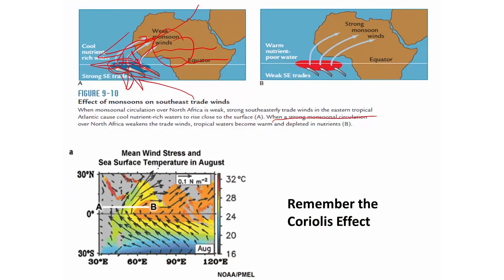On the other hand, when you have a weak monsoon, there is less Ekman divergence and upwelling is reduced. You have warmer sea surface temperatures, reduced upwelling, and reduced biological production. This change will appear in the sediments.